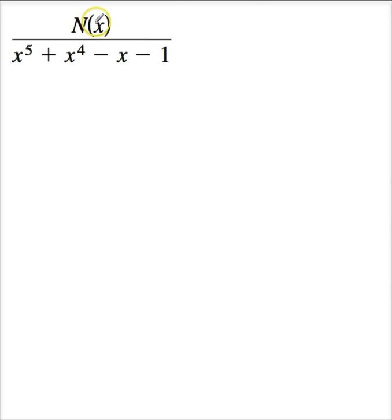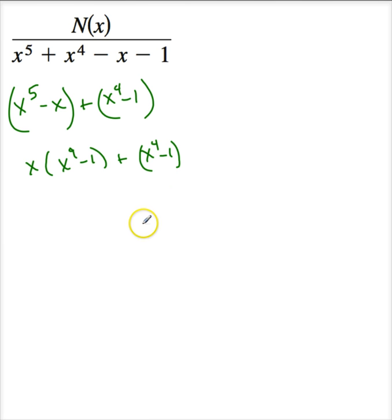Let's try one. Suppose I have N(x) divided by x to the 5th plus x to the 4th minus x minus 1. Now, I don't know what N(x) is, so I'm not going to actually be able to break this down. But how in the world do I factor this? What if I rewrite this as x to the 5th minus x plus x to the 4th minus 1, and I do some grouping? Now I can factor x out. And this is x to the 4th minus 1 plus x to the 4th minus 1.